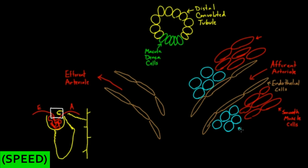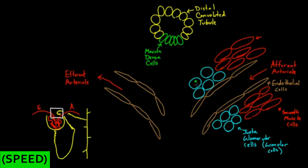And then you have these juxtaglomerular cells — talk about a funny word! Juxtaglomerular cells are there. And if you looked under a microscope, they'd be full of granules, and so sometimes they're even called granular cells. Let me draw in some granules — little green granules in this case — into all of them. You know that these cells are on both sides of the vessel because we cut it lengthways, so we're just looking at it as if it's disconnected. But obviously these two sides are touching if you thought of it in three dimensions.